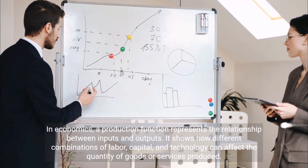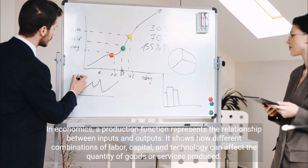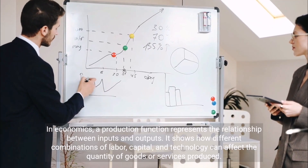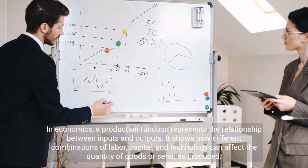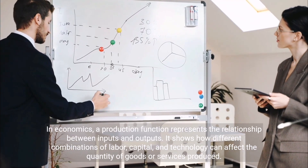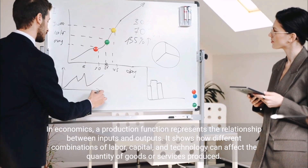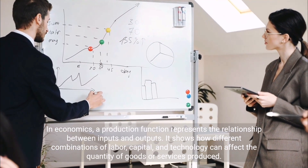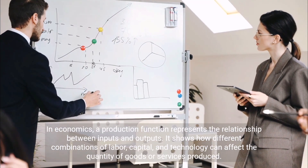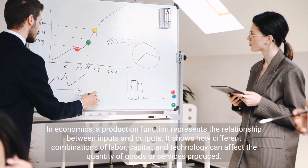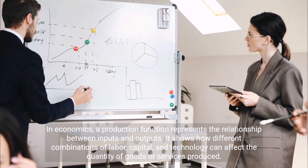In economics, a production function represents the relationship between inputs and outputs. It shows how different combinations of labor, capital, and technology can affect the quantity of goods or services produced.